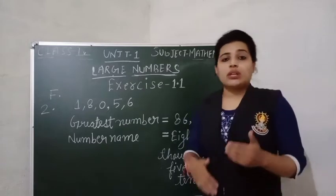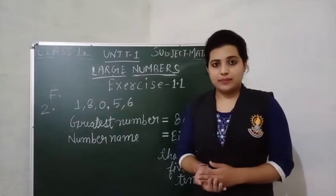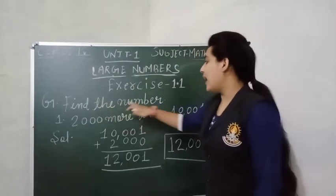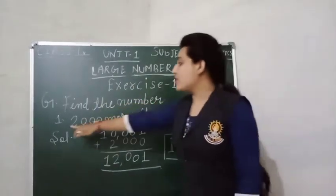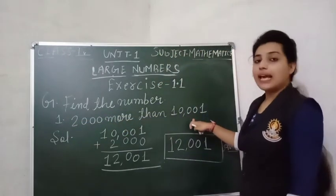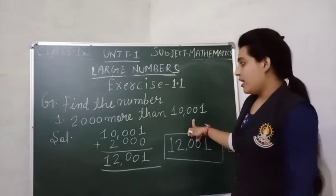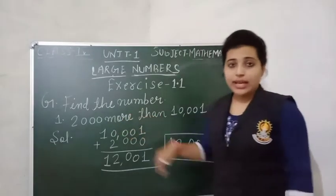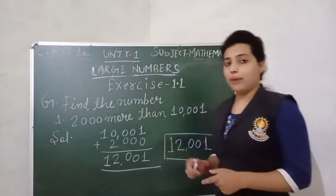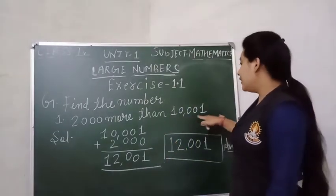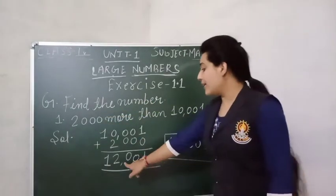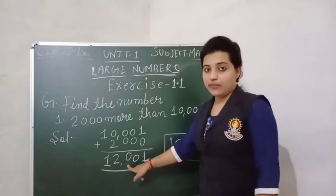Now our next question, question G: find the number. First question: 2,000 more than 10,001. If we are talking about more, that means we have to add the number. So to 10,001 we will add 2,000, and we will get 12,001.